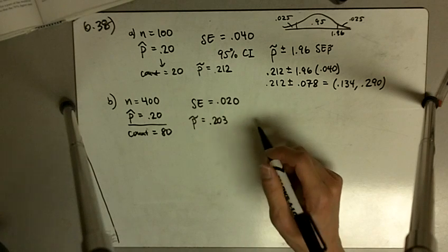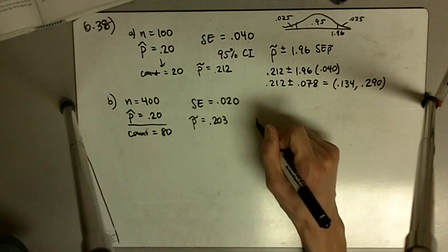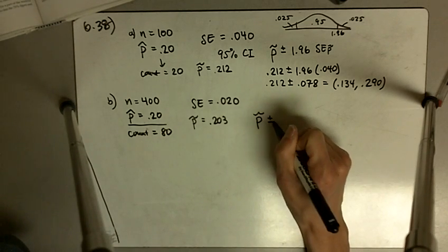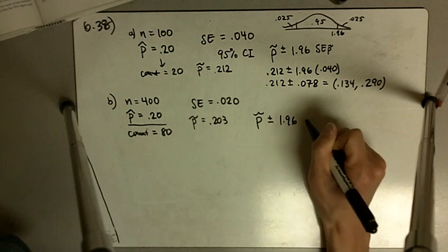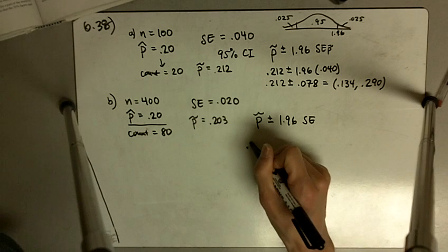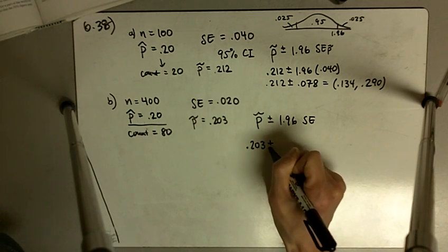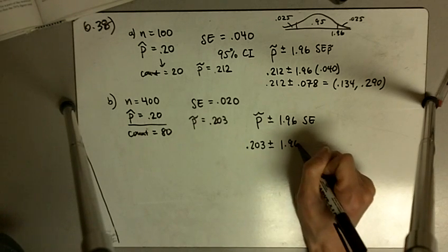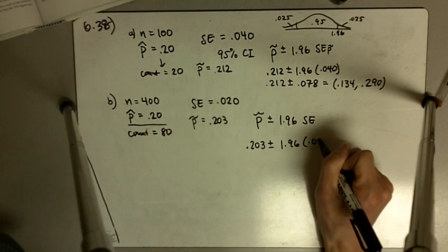And then for a sample size of 400, we still have P̂ plus or minus 1.96 times the standard error. And so that's going to be 0.203 plus or minus 1.96 times our standard error of 0.020.